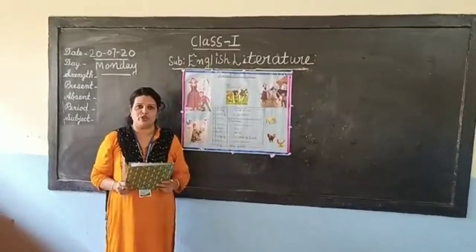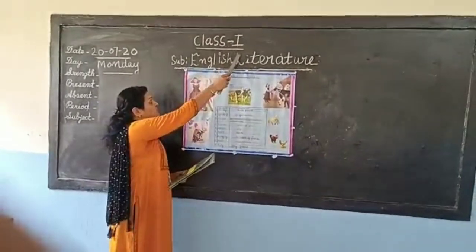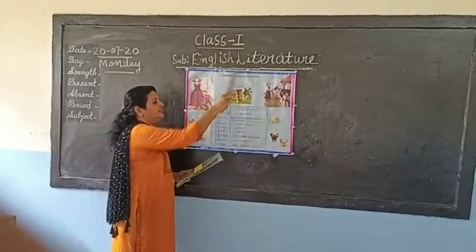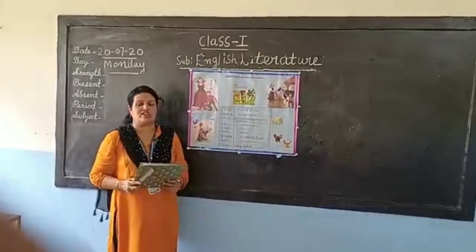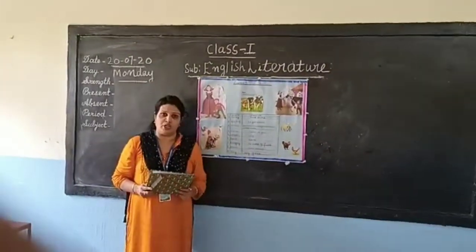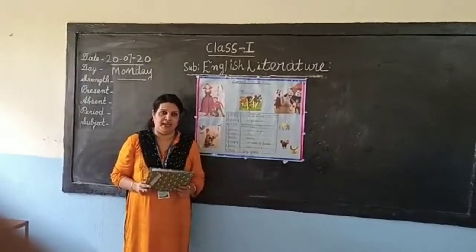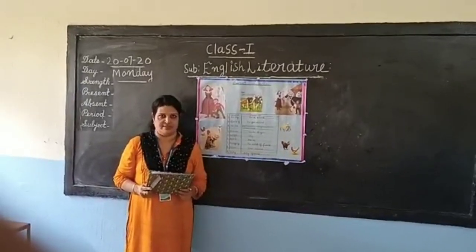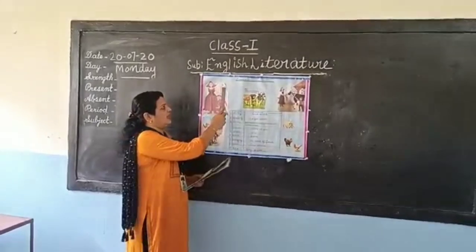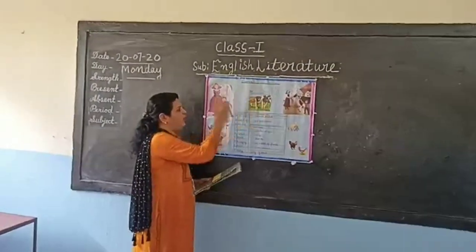A very good morning dear students, welcome to class 1, subject English Literature. So first of all, are you all attending the online classes? Please attend the classes. So students, let us get to the lesson, chapter 5, Daisy the Cow.